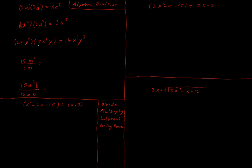This is the same reasoning we're going to use when we do division — that's why we started with those questions, because they can be easier to picture. Now let's do some actual division. If I have 15m squared divided by 3m, I'm going to start by dividing the numbers: 15 divided by 3 gives me 5. And m squared divided by m — I had 2 m's multiplied together and divided out one, so I'm left with just 1m.